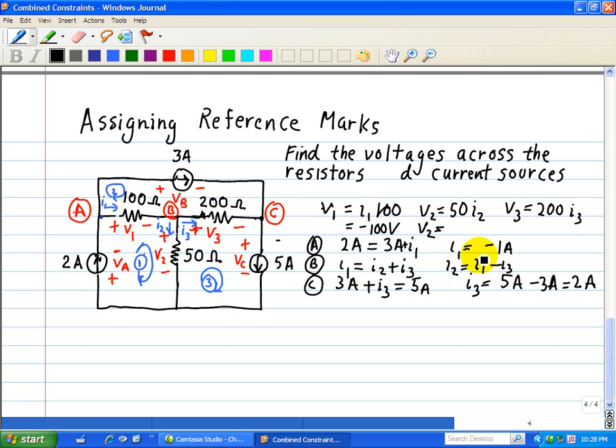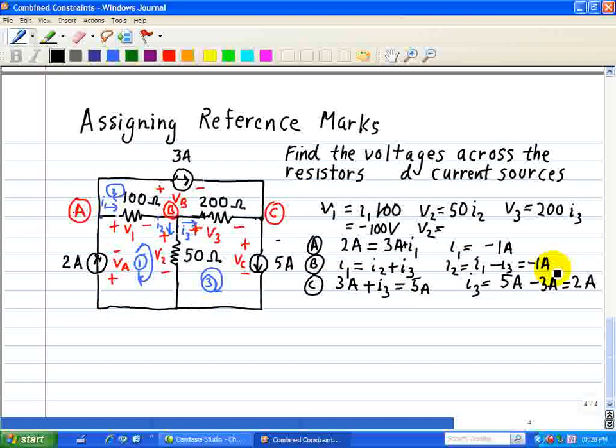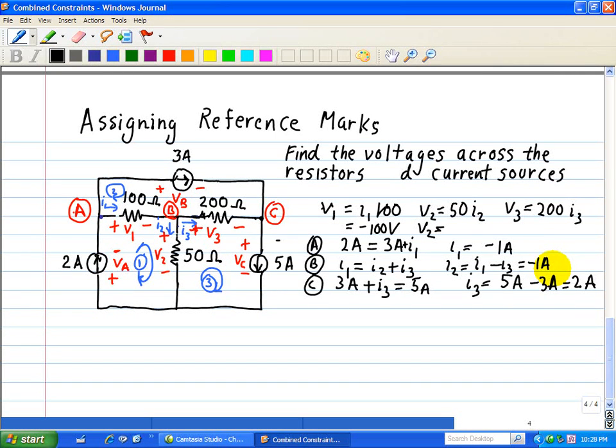We see that I1 is equal to minus 1 amp and that I3 is equal to 2 amps. So I1 minus 2 amps, we have I2 as negative 3 amps right here. So V2 now is equal to 50 times minus 3, which is equal to minus 150 volts.